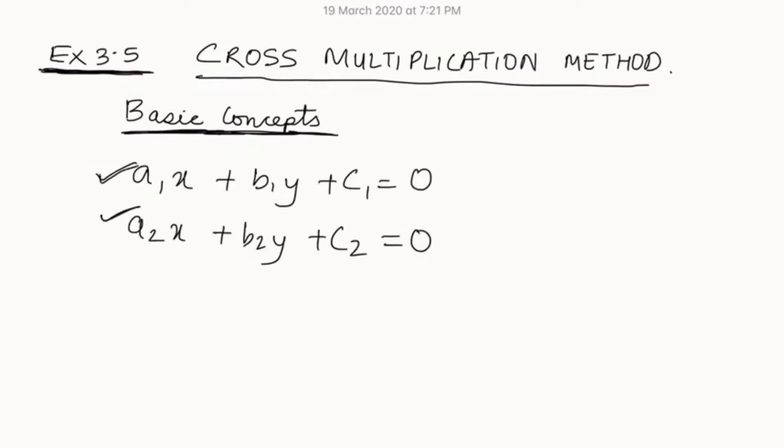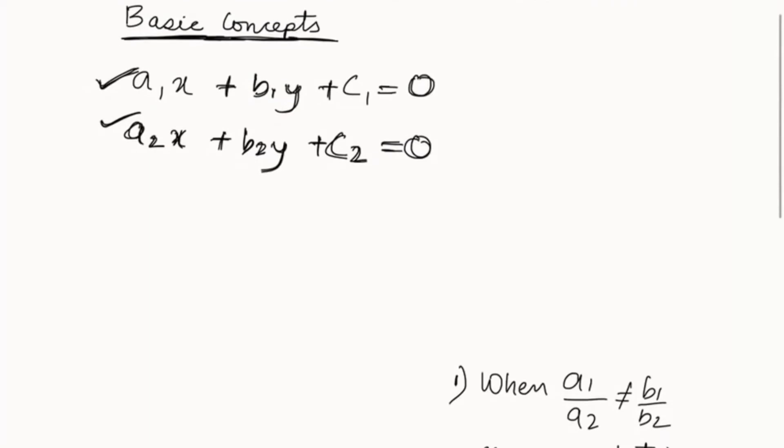This is the general form of a pair of linear equations. a1x plus b1y plus c1 equals to zero and a2x plus b2y plus c2 equals to zero. This is the general form of the linear equations.